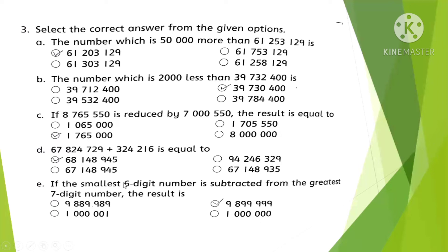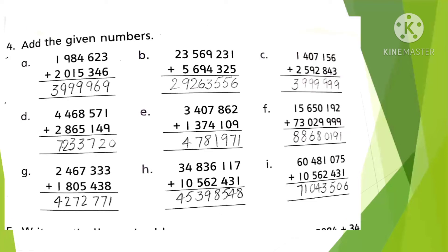If the smallest six-digit number is subtracted from the greatest seven-digit number, the result is this — the second option is correct. Question 4: Add the given numbers. We add them vertically as studied in fourth class. Part A: 3 plus 6 is 9, 2 plus 4 is 6, 6 plus 3 is 9, 4 plus 5 is 9, 8 plus 1 is 9, 9 plus 0 is 9, 1 plus 2 is 3.